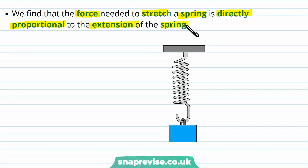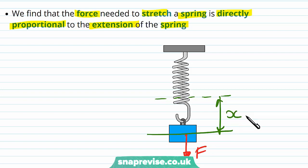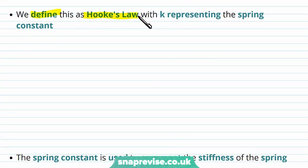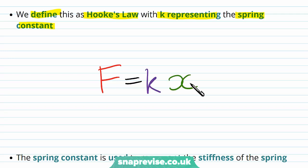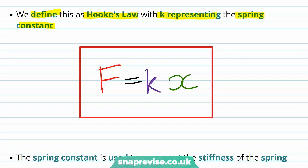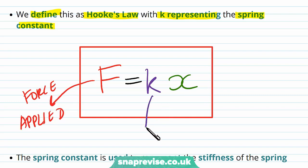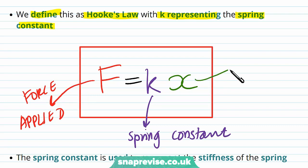We find that the force needed to stretch a spring is directly proportional to the extension of the spring. This is Hooke's Law, written as F = kX, where F is the force applied, X is the extension, and K is the spring constant — the constant of proportionality. The spring constant is unique to each spring and depends on its material and how it is made.